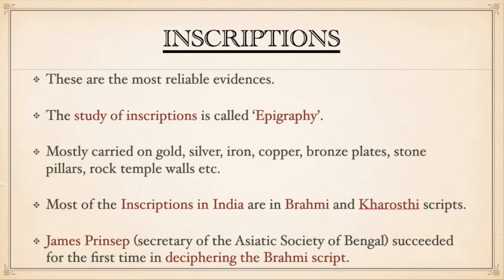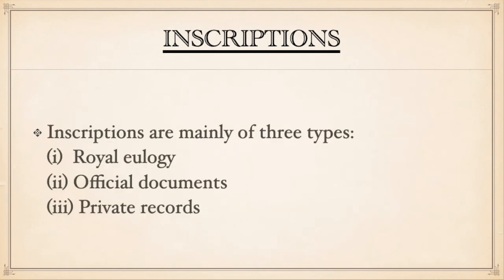Inscriptions are the most reliable evidences and their study is called epigraphy. These are mostly carved on gold, silver, iron, copper, bronze plates, stone pillars, rock temple walls and are free from interpolations. Most inscriptions in India are in Brahmi and Kharosthi scripts. James Prinsep, the secretary of the Asiatic Society of Bengal, succeeded for the first time in deciphering the Brahmi script. Inscriptions are mainly of three types: royal, official documents, and private records.